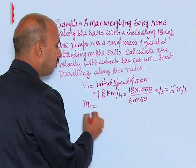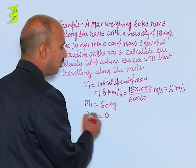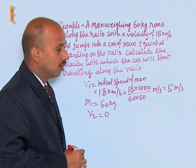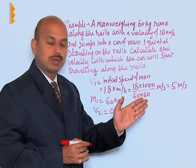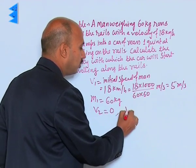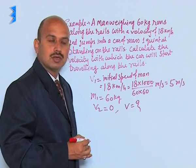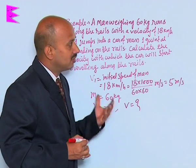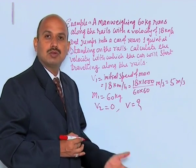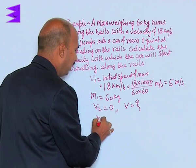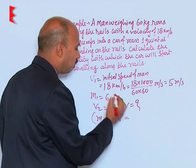M1 is the mass of the man, that is 60 kg. V2, the velocity of the car, is 0. When the man jumps into the car, both the car and man start moving together with a final velocity V that has to be calculated. There is no external force on the system of the man and the car, so total initial momentum equals total final momentum.